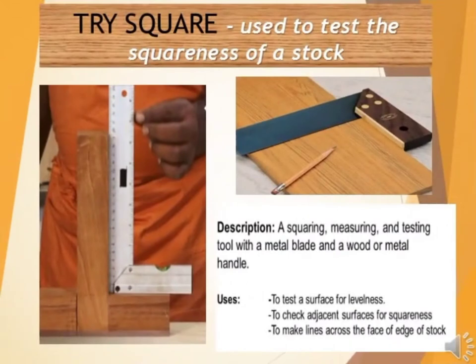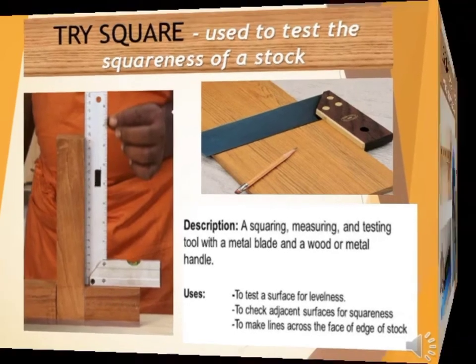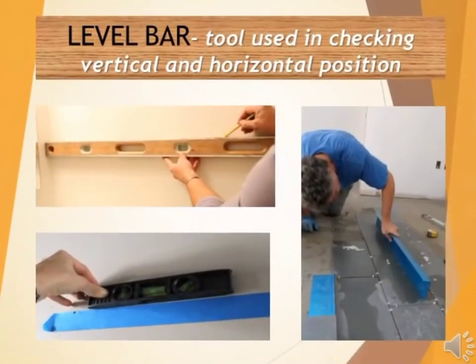Trisquare — a trisquare is used to test the squareness of a stock. It is used to test surfaces, check adjacent surfaces, and to make lines across the face and edge of a stock. Level Bar — a level bar is a tool used in checking vertical and horizontal position.